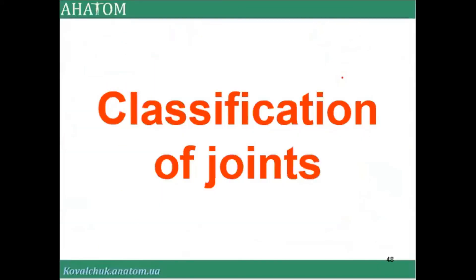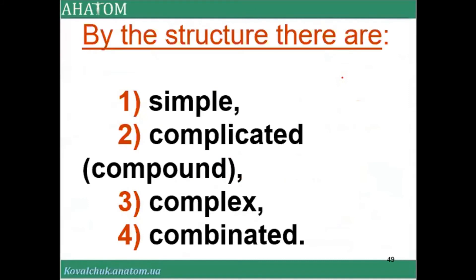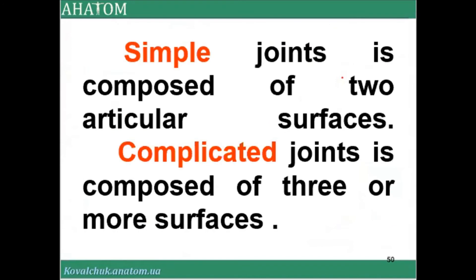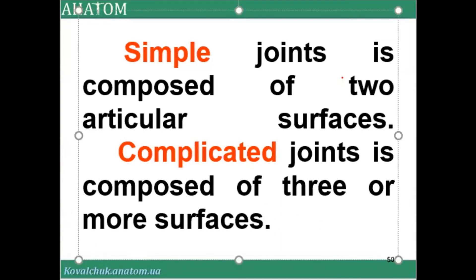Classification of joints by structure includes: simple, complicated (compound), complex, and combined. Simple joints are composed of two articular surfaces — that is, two bones connecting. Complicated joints are composed of three or more articular surfaces, or three or more bones together.